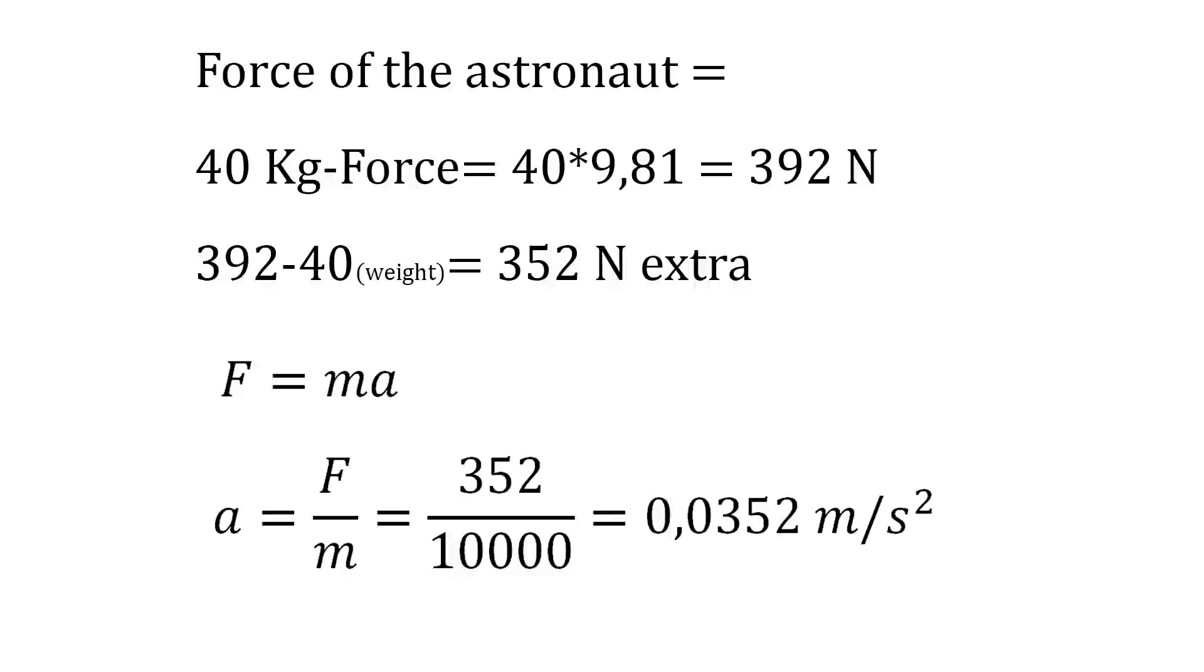Because force equals mass times acceleration, the acceleration will be the force divided by the mass. 352 divided by 10,000 equals 0.035 meters per second squared.